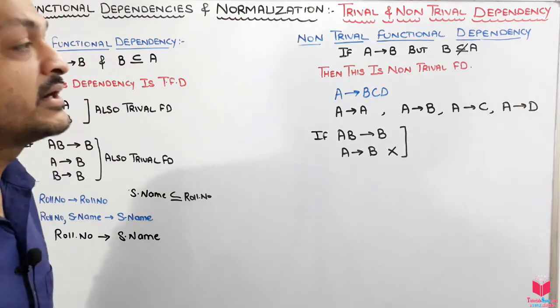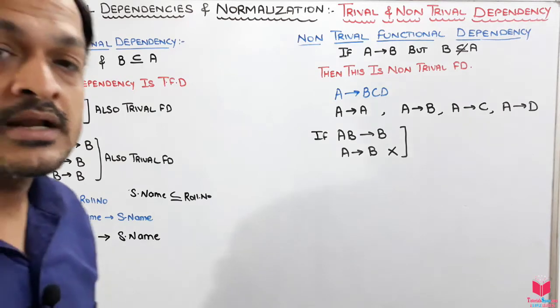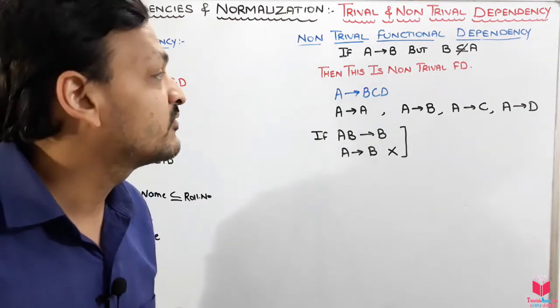This is all about the trivial and the non-trivial functional dependency. Later on in the next session, we will discuss the transitive and non-transitive functional dependency that is quite important for the second normal form.